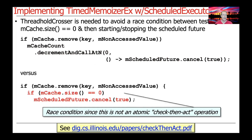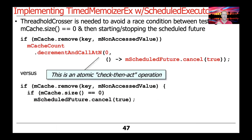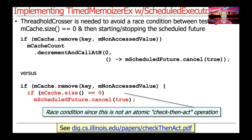You might ask why we don't just check the size of the ConcurrentHashMap and act accordingly. The reason is that checking the map size and then canceling is not an atomic operation — each step is atomic individually, but their composition is not. We need an atomic check-then-act, which is exactly what ThresholdCrosser provides. This illustrates a key subtlety of concurrent programming: the ConcurrentHashMap never locks the entire map on any operation, so we need these clever tricks.